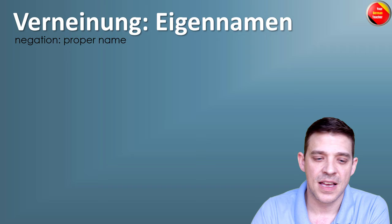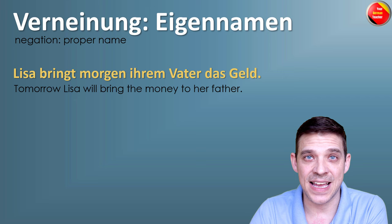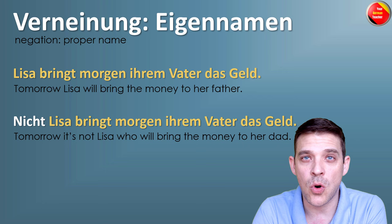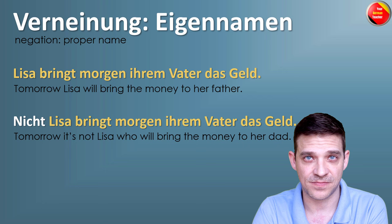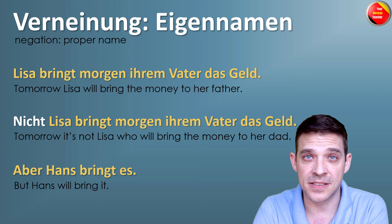The last one is Eigennamen — proper names. Same example: 'Lisa bringt morgen ihrem Vater das Geld.' Lisa is a proper name (Eigenname). If you want to negate it, it becomes: 'Nicht Lisa bringt morgen ihrem Vater das Geld.' Somebody is going to bring the money tomorrow to her dad, but it's not Lisa. It makes more sense if you add additional information, such as: 'aber Hans bringt es' — Hans is going to bring it. Nicht Lisa, aber Hans.